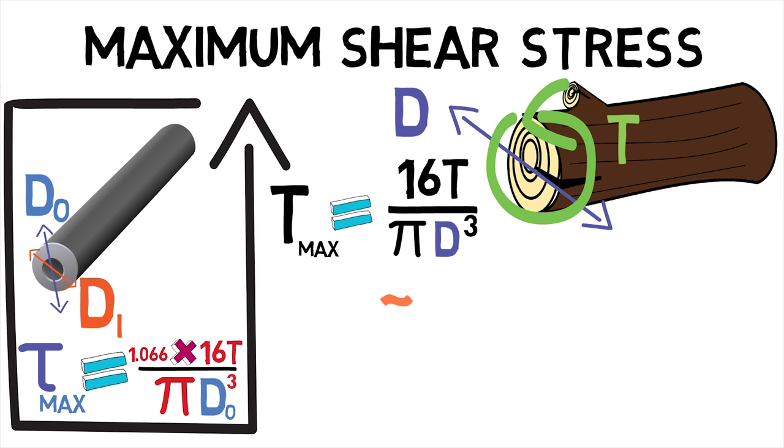From the above equations, we can infer that maximum shear stress is directly proportional to the torque applied and inversely proportional to the outer diameter cubed.